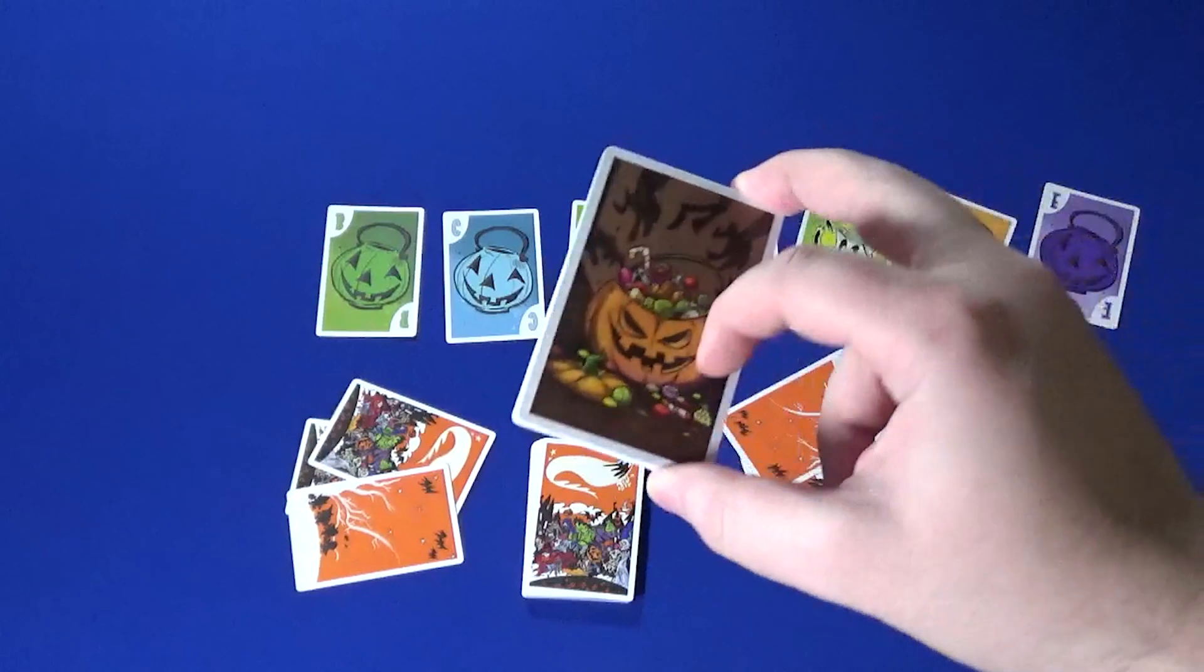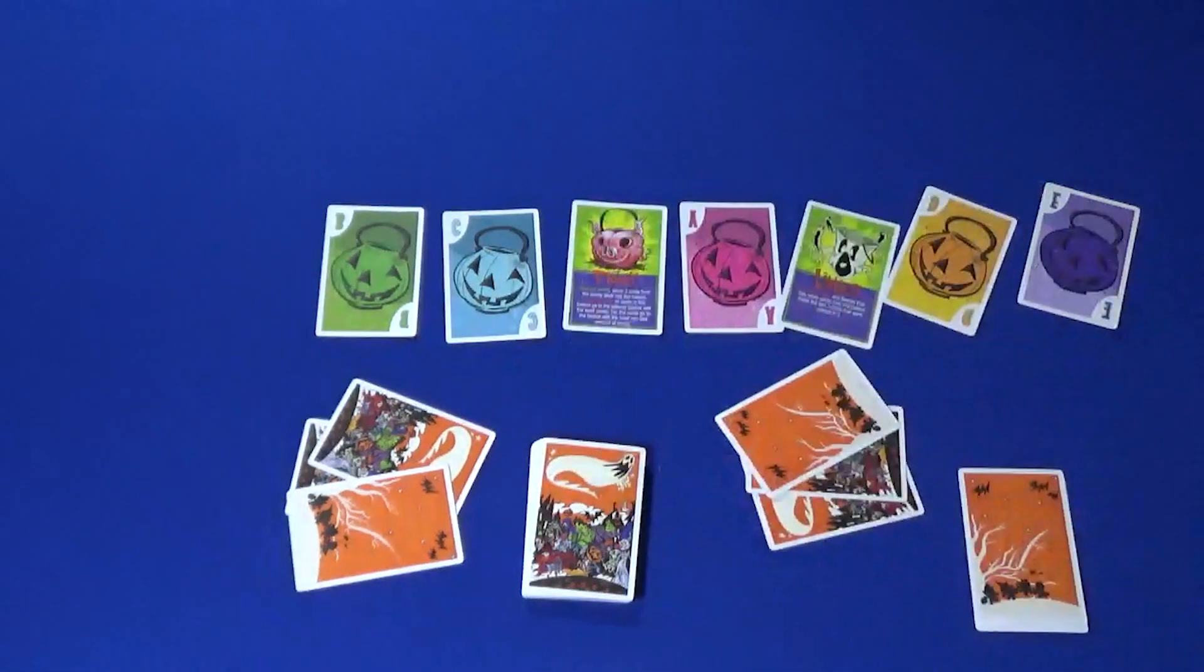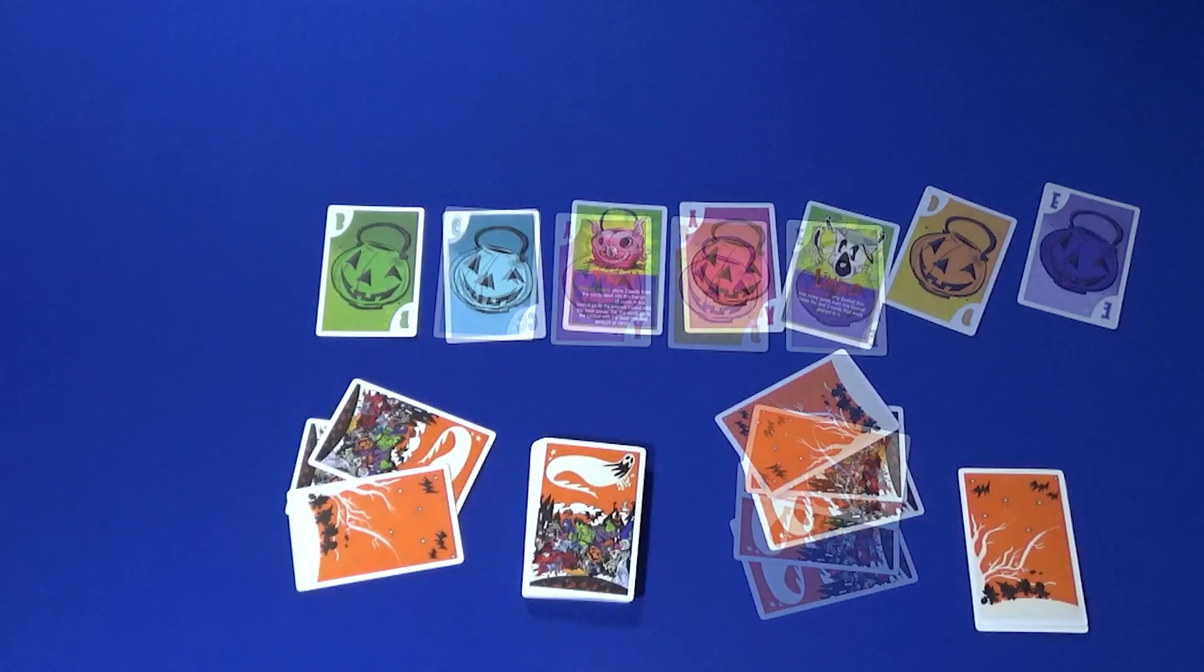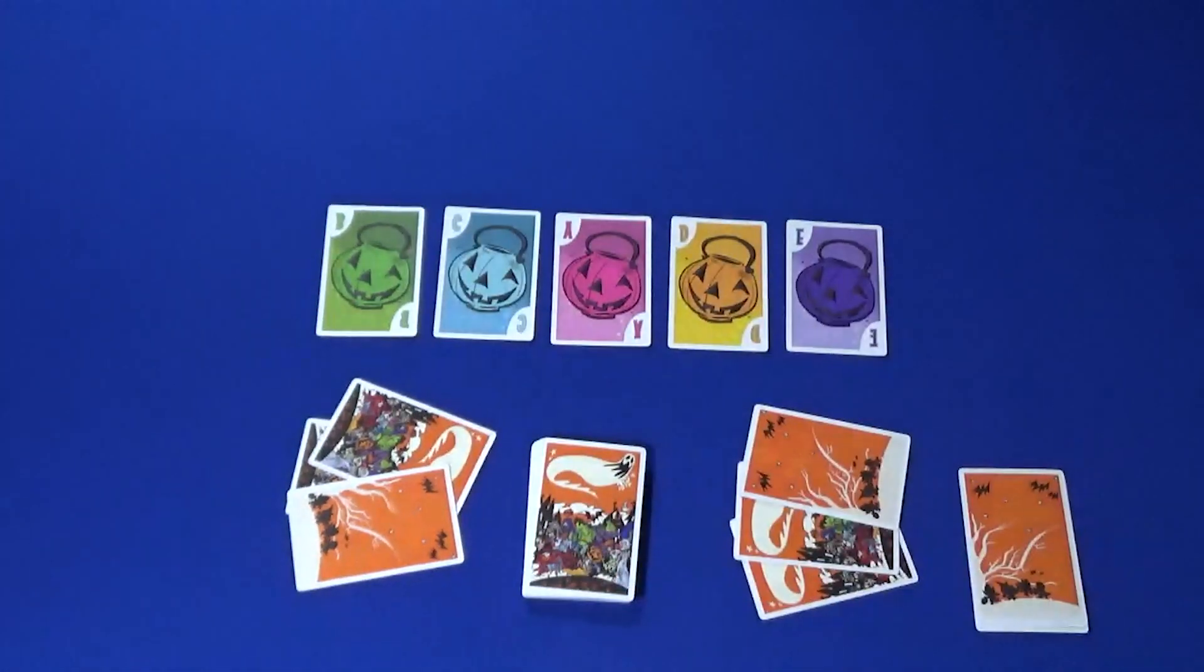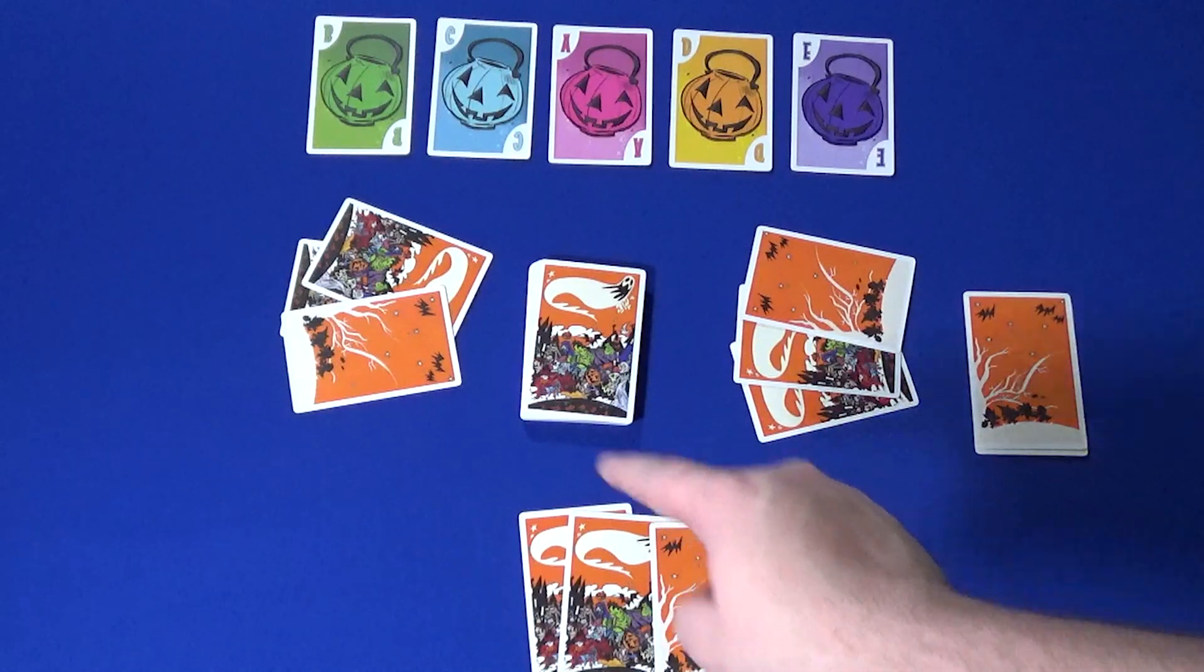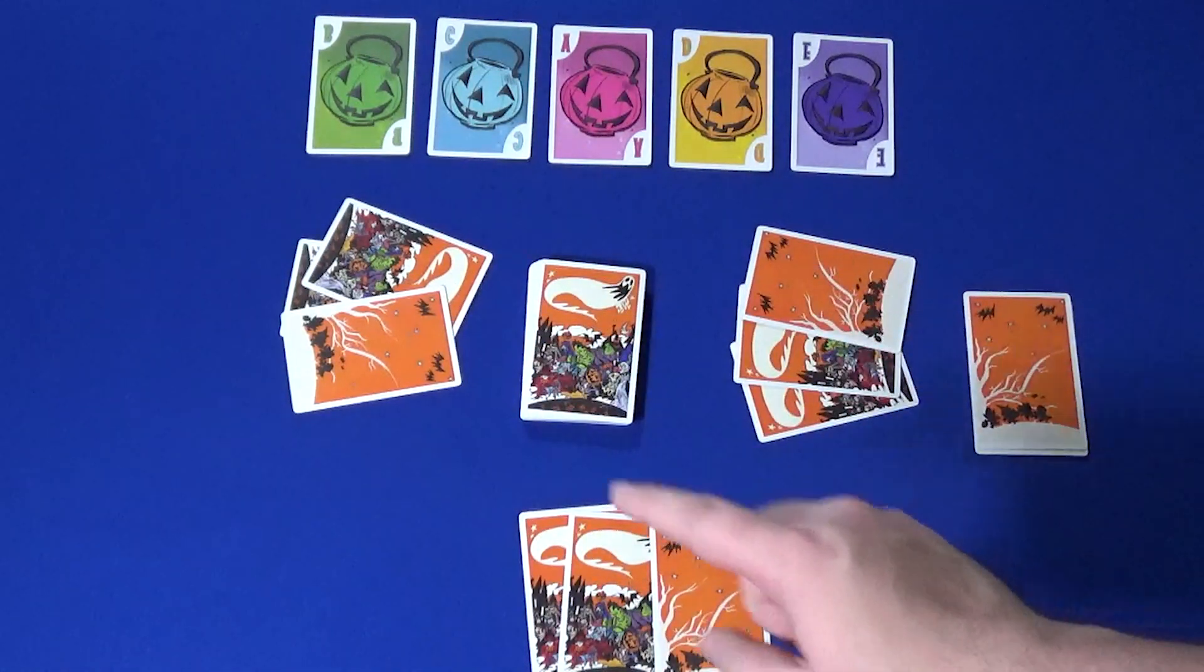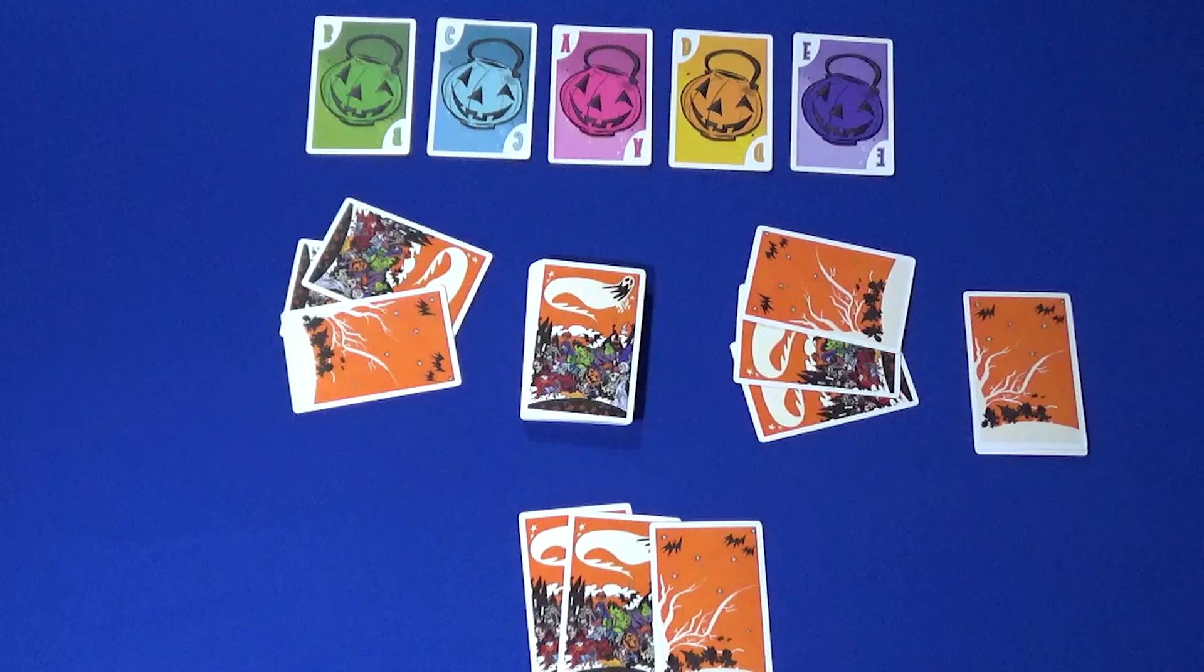Any unused special baskets can be put back in the box. However, if you don't want to use the special baskets, then you can simply put them all in the box. Finally, determine the player who most recently ate candy and they will be the starting player, with play then proceeding clockwise.